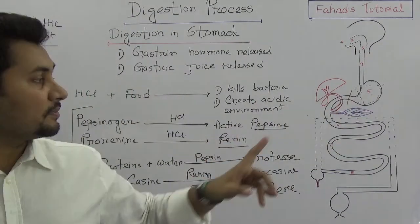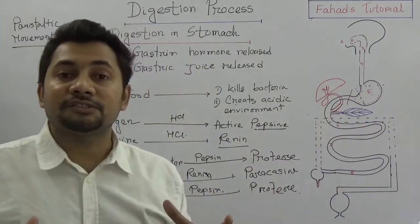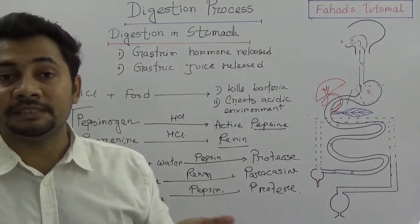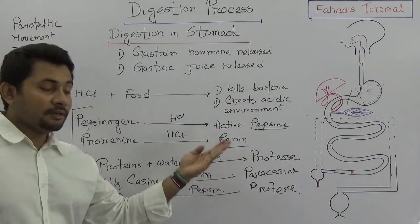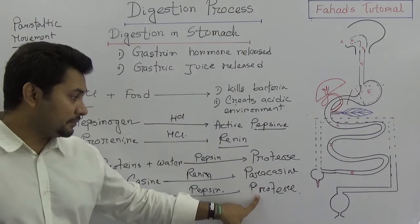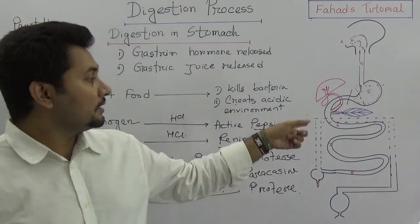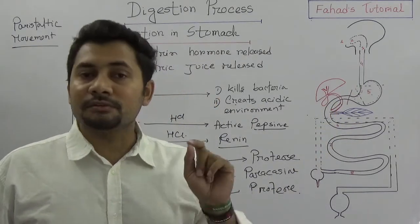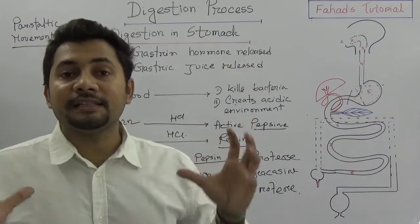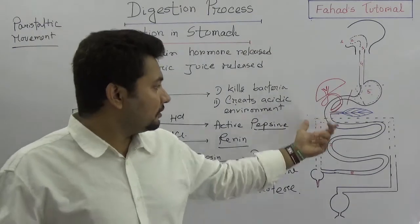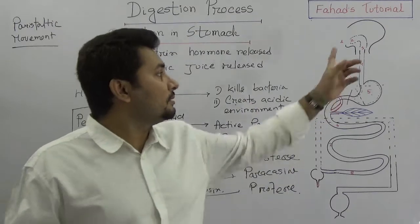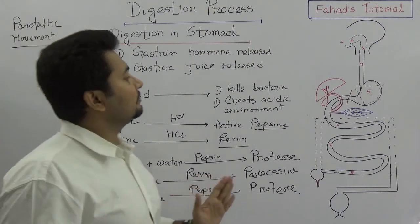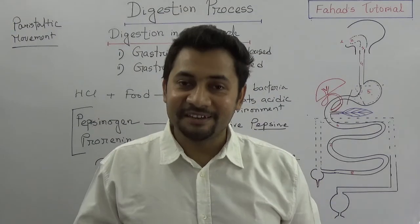In short, the gastric glands in the inner layer of the stomach secrete gastric juice, which increases the activity of hydrochloric acid, pepsin, and renin. Pepsin and renin produce paracasein and proteose, which are known as polypeptides. In the next video, I will explain the digestion process in the small intestine, which is more complex with many other enzymes and hormones. I hope you understand the process going on inside the stomach — take care and stay well.